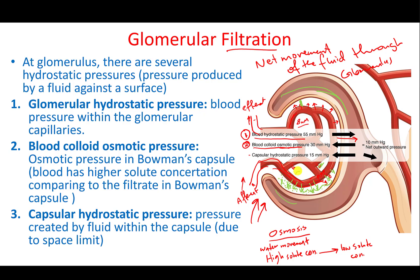The space between Bowman's capsule and the glomerulus fills with filtrate that has a high concentration of solutes, whereas the blood remaining in the glomerulus has a relatively low solute concentration. Based on osmosis, this drives an opposing movement of water back toward the glomerulus — this is the blood colloid osmotic pressure acting as an opposing force to filtration.